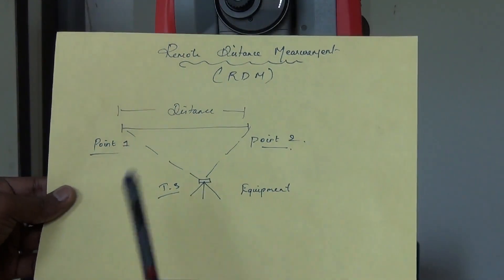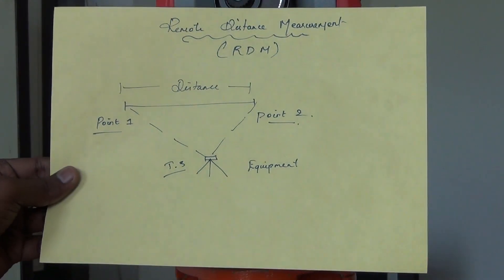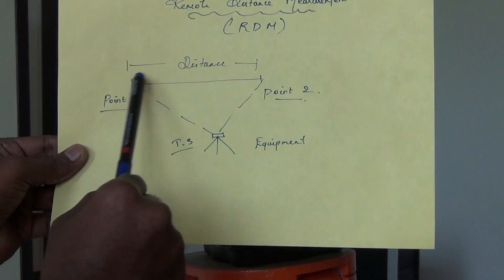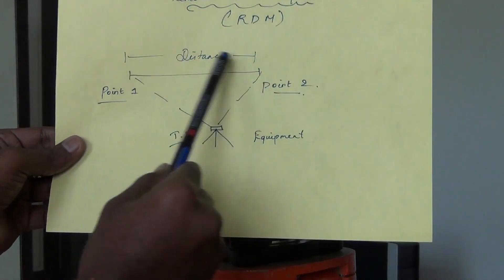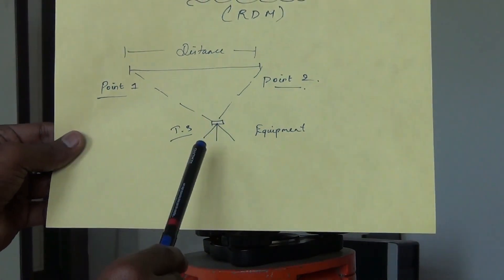When we look at remote distance measurement, we can look at RDM application. It is not in the total station. What we do is we can go to two points and measure the distance between the two points.